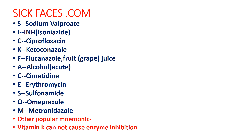Continuing SICKFACES.COM: S = Sulfonamide; O = Omeprazole; M = Metronidazole. Another popular mnemonic is 'Valproate, Ketoconazole, Cimetidine, Ciprofloxacin, Chloramphenicol, Erythromycin — I and H means Inhibition.' Any of these three mnemonics can be used to remember enzyme inhibitors. Hope you liked it, thank you for watching.